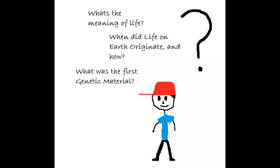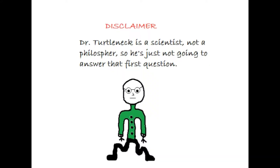Daniel was always a curious kid. He always wondered: what's the meaning of life? When did life on Earth originate, and how? What was the first genetic material? Some questions we might never know the answer to, but luckily we can answer these. Dr. Turtleneck is actually a geologist and not a philosopher, so we won't be able to answer the first one, but we can definitely answer the last two.